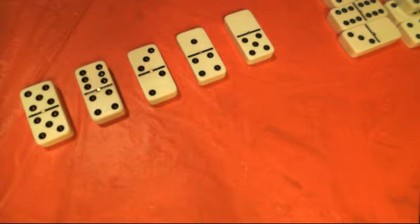In the double six set of dominoes there are 28 dominoes, but there are only five dominoes that will score without the assistance of any other domino.